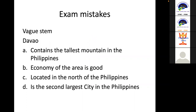There are common exam mistakes. For example, a vague stem: 'Davao — A, contains the tallest mountain in the Philippines; B, economy of the area is good; C, located in the north of the Philippines; D, is the second largest city in the Philippines.' Why is this incorrect? Because the stem only says 'Davao,' and the exam taker does not really know what aspect of Davao the question is about.